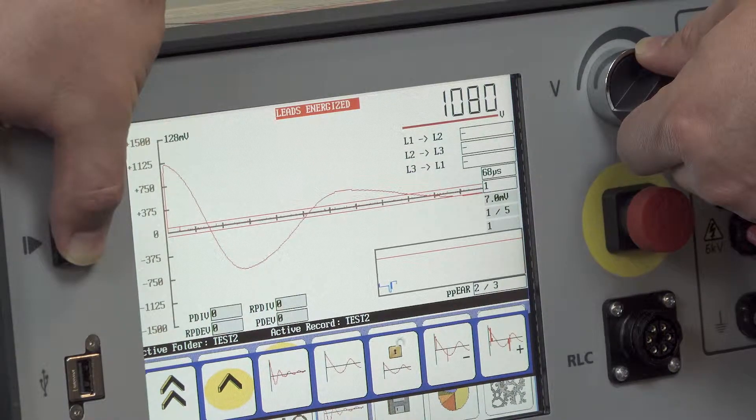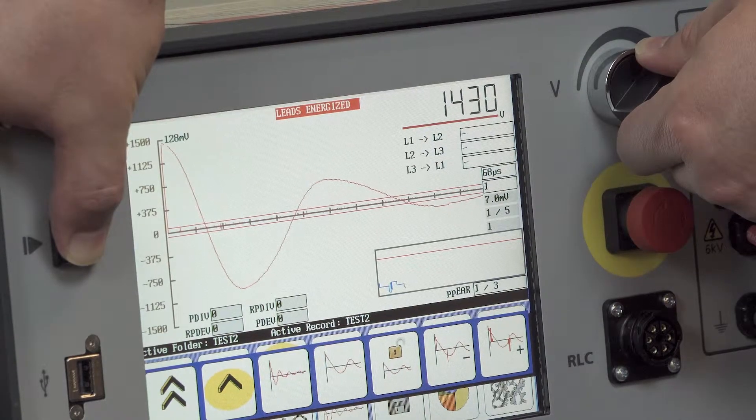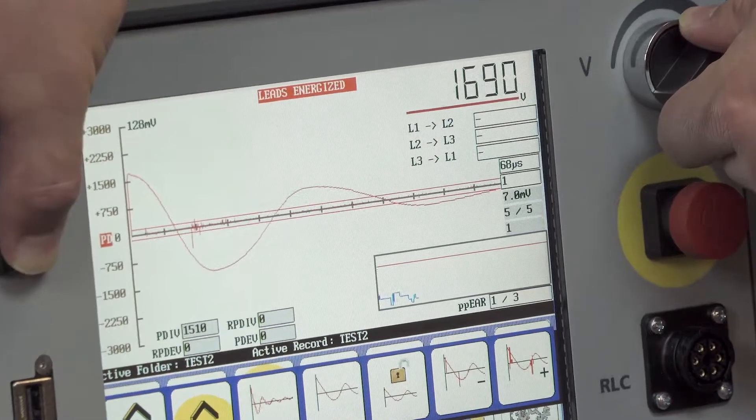And if partial discharge is detected, we'll get voltages indicated for PDIV and RPDIV, as we see there.